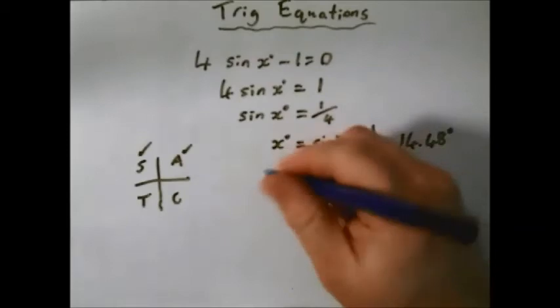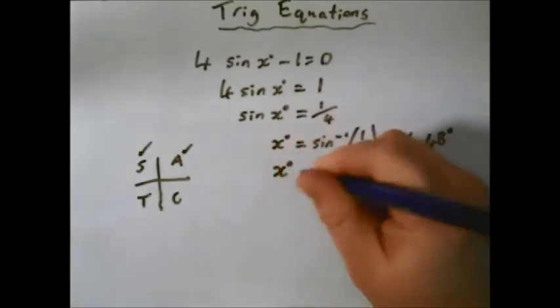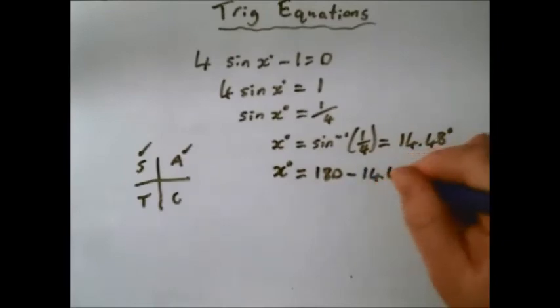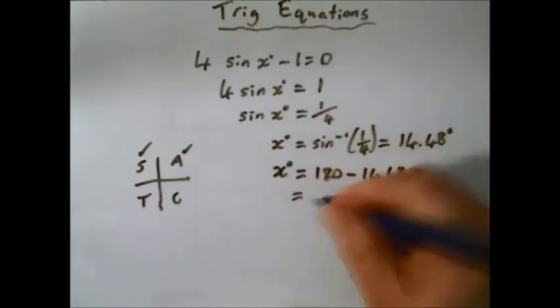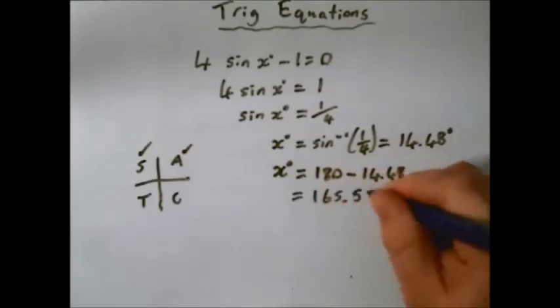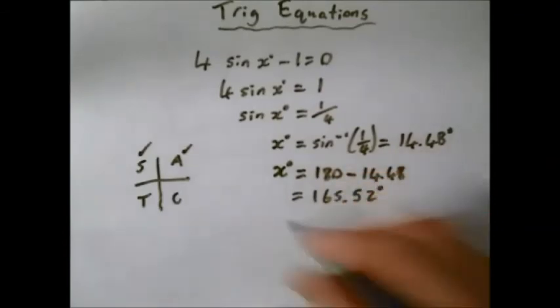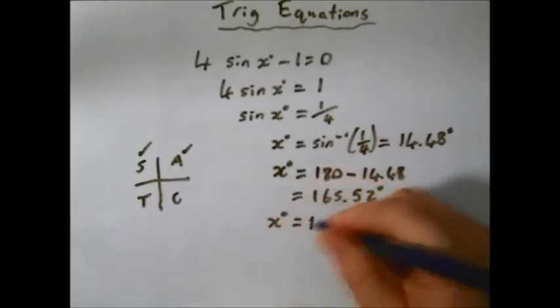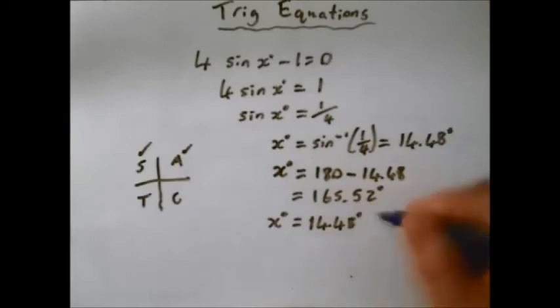So x degrees equals 180, take away 14.48, which equals 165.52 degrees. So we're done, we're just going to write our two answers together to finish it off. x equals 14.48 degrees and 165.52 degrees.